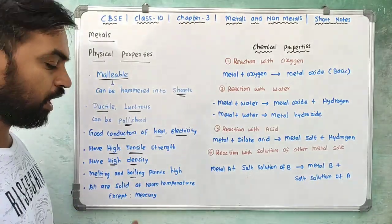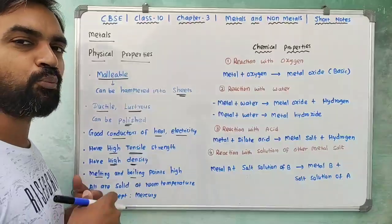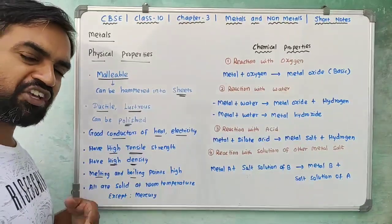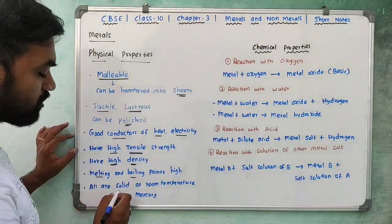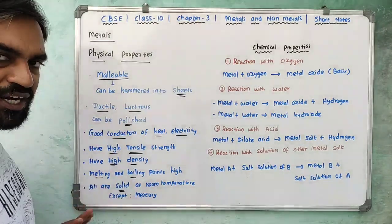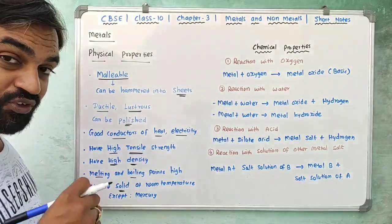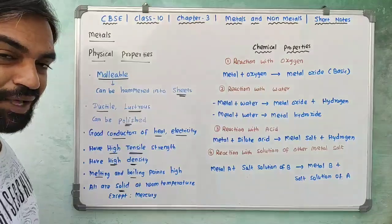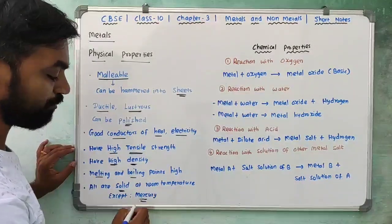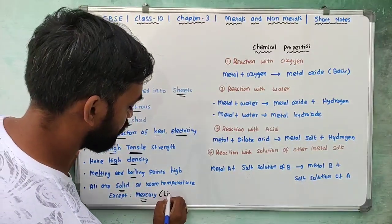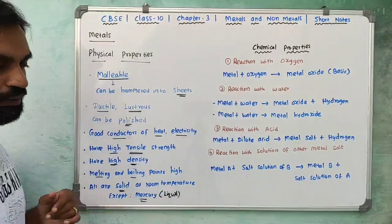Metals have high melting points and high boiling points. All metals are solids at room temperature. The exception is mercury — mercury is a liquid metal. Mercury is an important exception to remember.